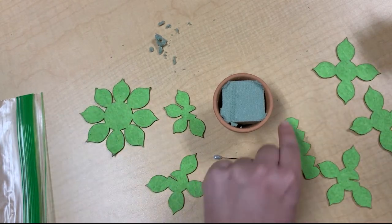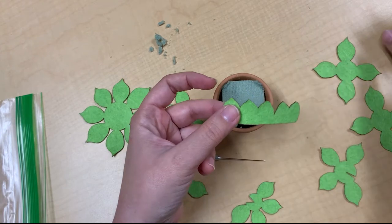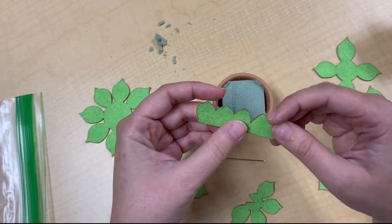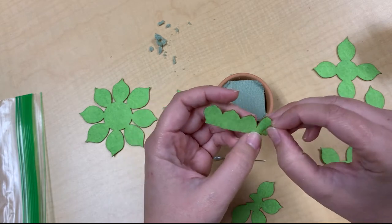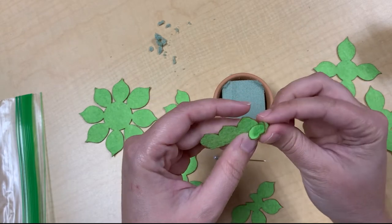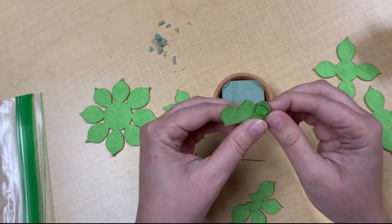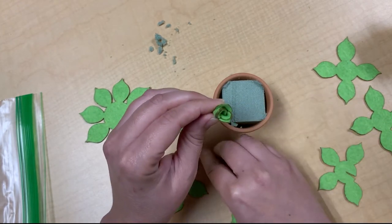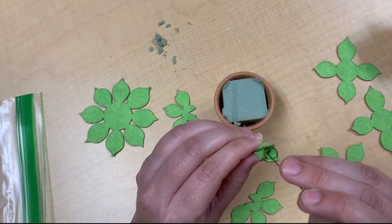To start with, you want to take this piece right here. We're going to start at the center and work our way to the outer leaves. For this, you're going to twist it up like this, and then this is the trickiest part, honestly.